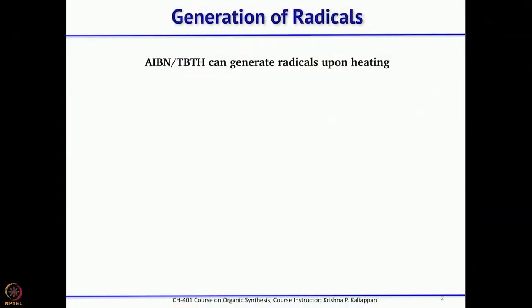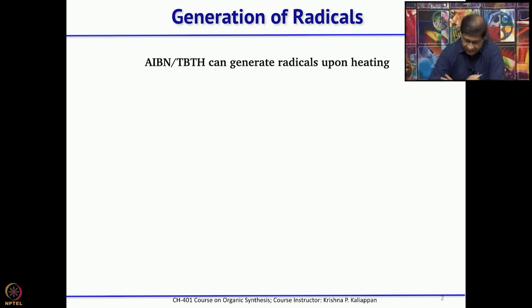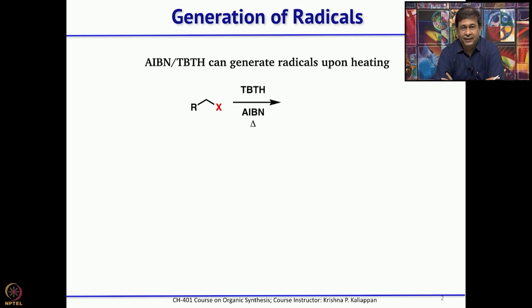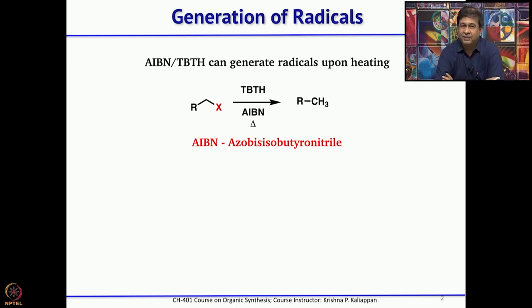Radicals can be easily generated from corresponding alkyl halides or nitroalkynes. One of the most common methods for generating radicals is to take an alkyl halide and treat it with tributyltin hydride and AIBN. AIBN is azobisisobutyronitrile. You take this compound and one can easily dehalogenate — if you have an alkyl halide, that halide can be replaced by hydrogen.